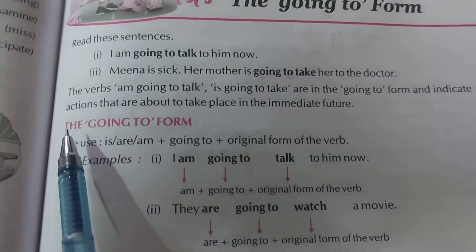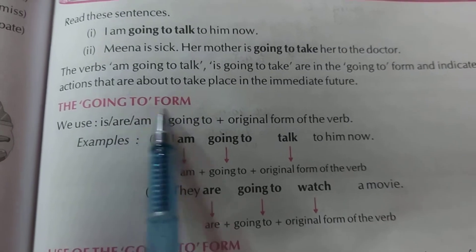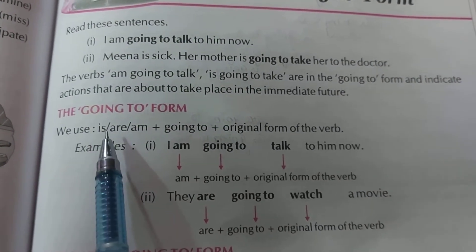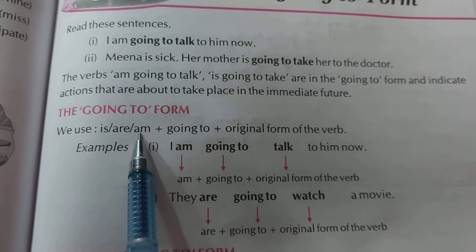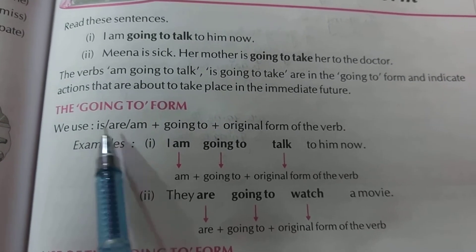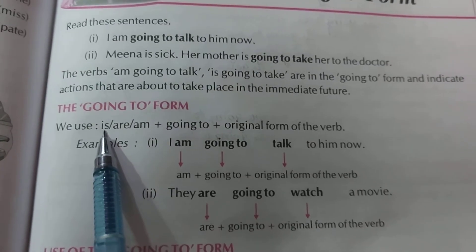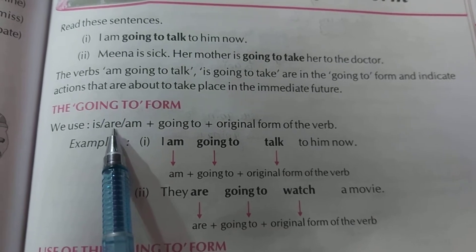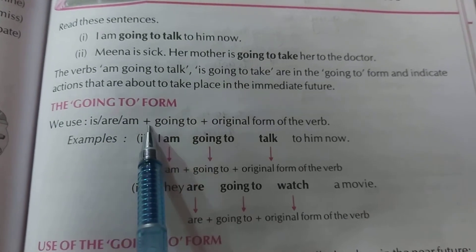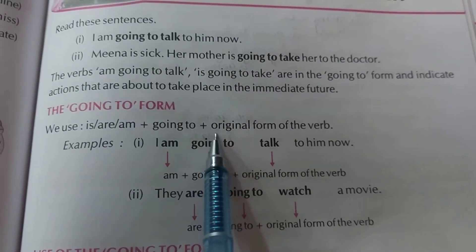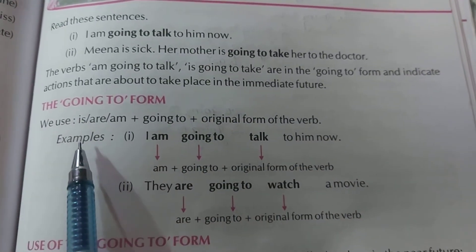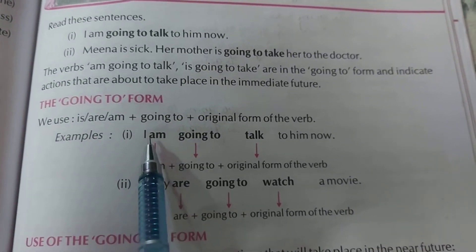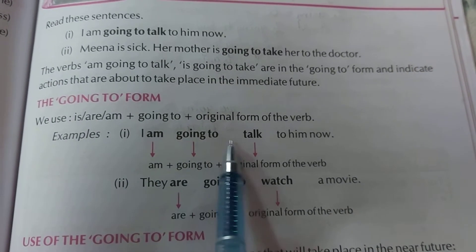Let's talk about the going to form rule. You have to use is, am, or are as per the subject. If the subject is singular, use 'is'. If the subject is 'I', use 'am'. If the subject is plural, use 'are', plus 'going to', plus the original form of the verb. Let's discuss this rule with examples.